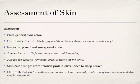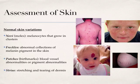Normal skin variations include nevi — the term for moles — which are melanocytes that grow into clusters. Freckles are a collection of melanin in the skin. Patches are another common finding; these are birthmarks that can appear as flat macule brown areas, or sometimes strawberry hemangiomas, which are collections of blood vessels common in pediatric patients. Hemangiomas often reabsorb and shrink as the child gets older. Striae is the other term for stretch marks, which occur from stretching and tearing of the epidermis.